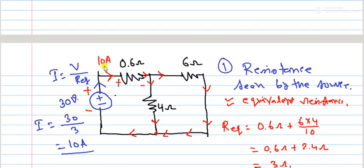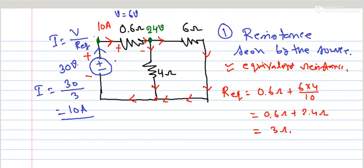The resistance is absorbing. 10 ampere current is flowing through 0.6 ohm, so the voltage across it is 10 times 0.6, which equals 6 volts. The voltage at the next point is 30 minus 6 volts, which is 24 volts. This 24 volts is available across the parallel resistors.